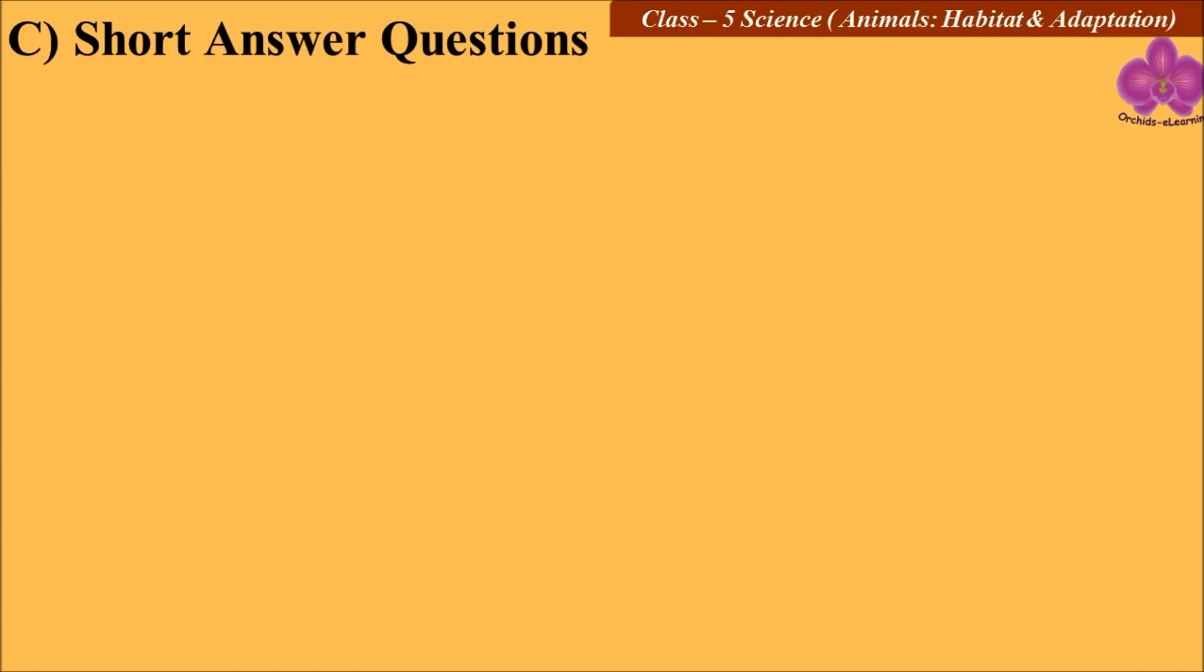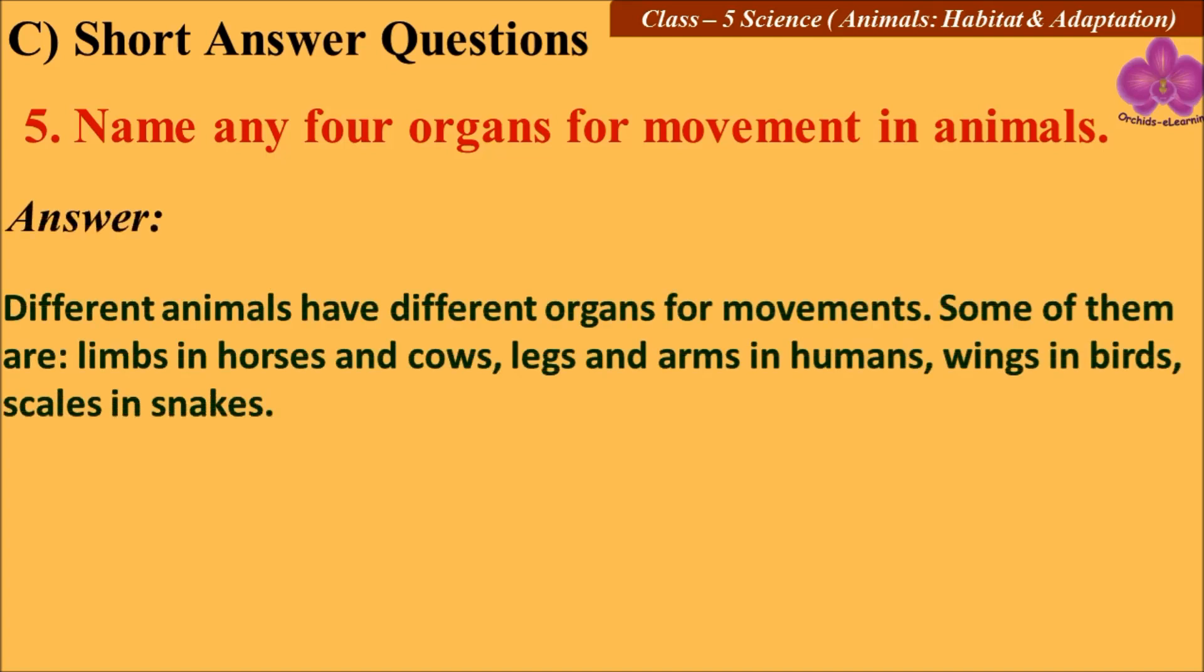And the last question for today is: Name any four organs for movement in animals. Different animals have different organs for movement. Some of them are limbs in horses and cows, legs and arms in humans, wings in birds, and scales in snakes.